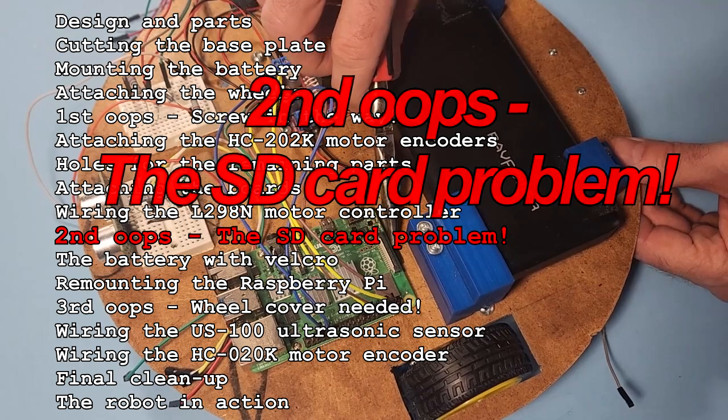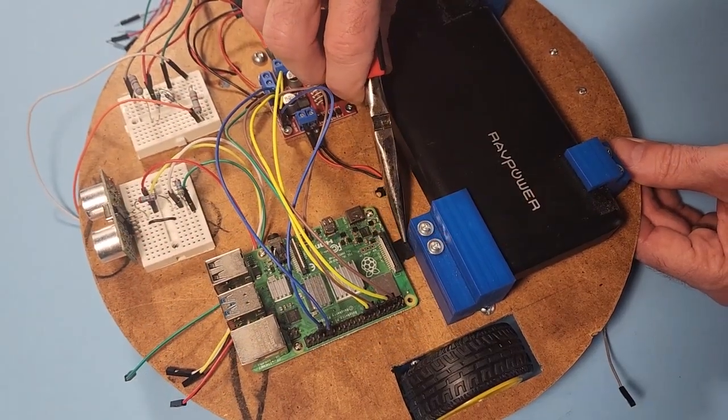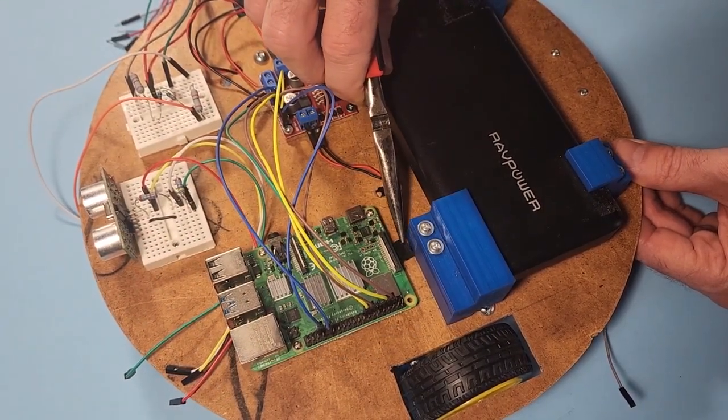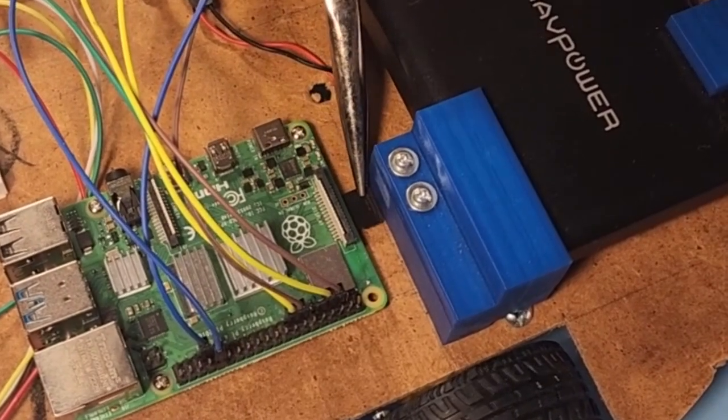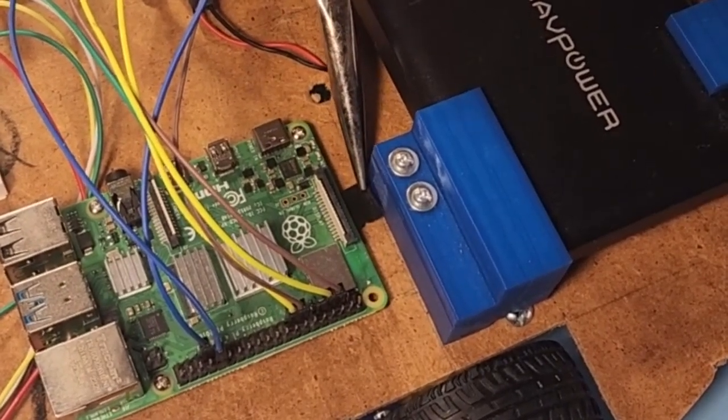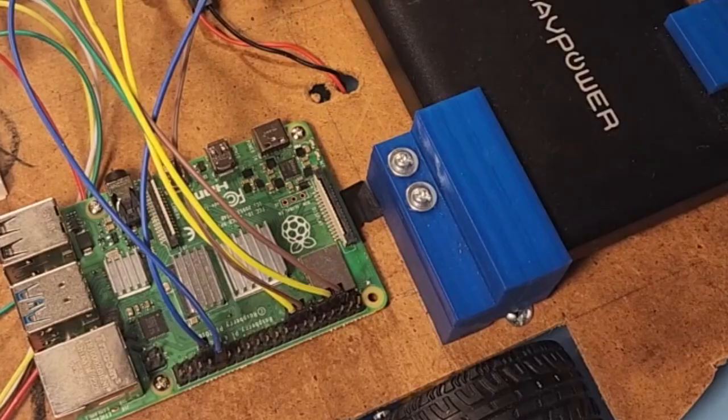The next step was to run a program on the Raspberry Pi to test out the motors. That's when I realized I had another problem. I tried to pull out the SD card and couldn't. Whoops. One of the battery supports was in the way.